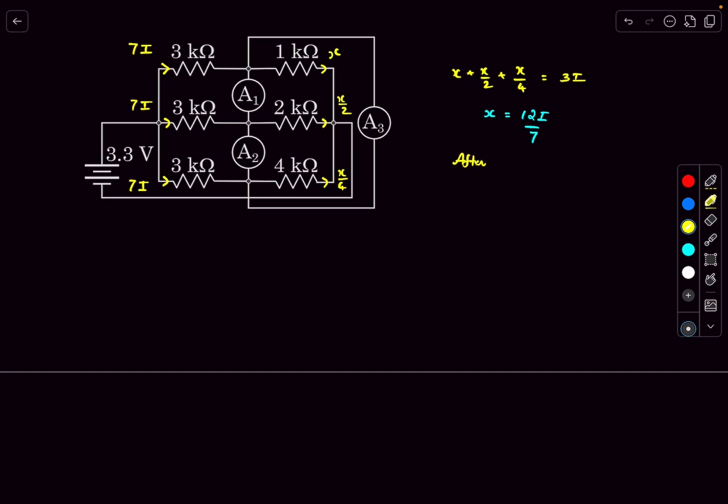So after the scaling, basically we multiply each current term by 7. So the new value of x will become 7 times the previous one which is 12i. So the current over here will be 12i, the current in this branch will be 6i, and the current in this branch will be 3i.